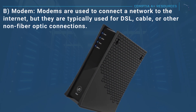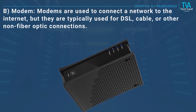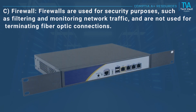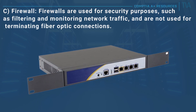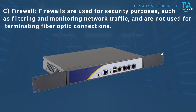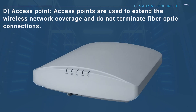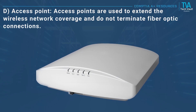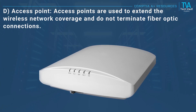B, modem: modems are used to connect a network to the internet, but they are typically used for DSL, cable, or other non-fiber-optic connections. C, firewall: firewalls are used for security purposes such as filtering and monitoring network traffic, and are not used for terminating fiber optic connections. D, access point: access points are used to extend wireless network coverage and do not terminate fiber optic connections.